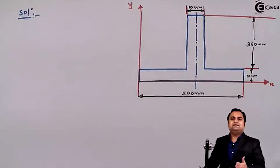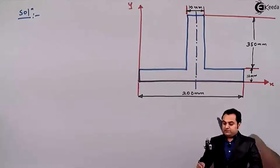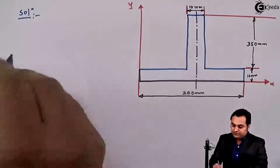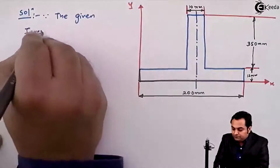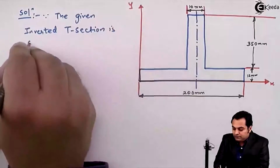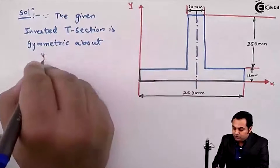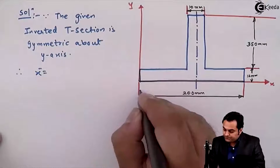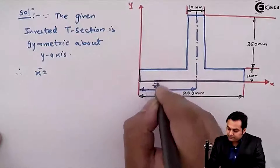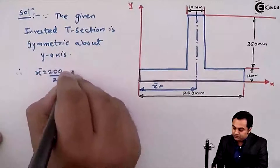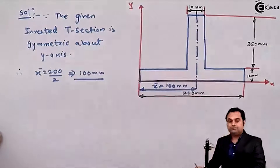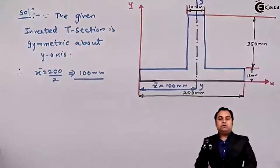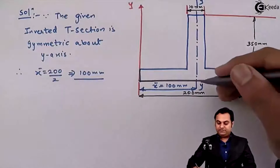To calculate polar moment of inertia we require both IXX and IYY values. First, we need the location of the centroid. Since the given inverted T section is symmetric about the Y axis, x̄ — the distance from the reference Y axis — is half of 200, which is 100 mm. The centroid lies on this Y axis.